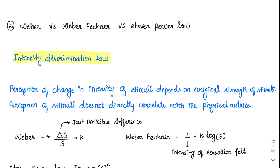So what did they say? They said two things. First, perception of change in intensity of stimuli depends upon the original strength of the stimuli. For example, if I give you a 1 kg object in your hand and over it I try to add 100 grams, you might be able to perceive a slight increase in weight.